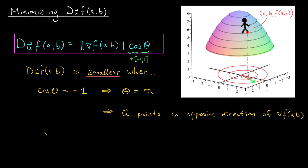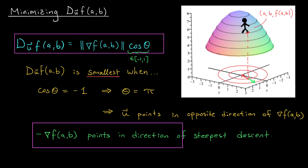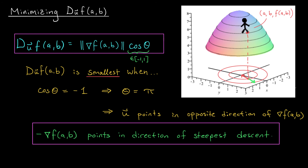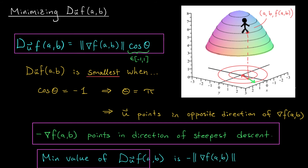This gives us our second important property about the gradient. Minus del f at ab points in the direction of steepest descent — Patrick moves against what his compass tells him. And just as before, our analysis reveals the minimum possible value: the directional derivative is smallest when cos theta is minus one, giving a minimum value of minus the norm of del f at ab.